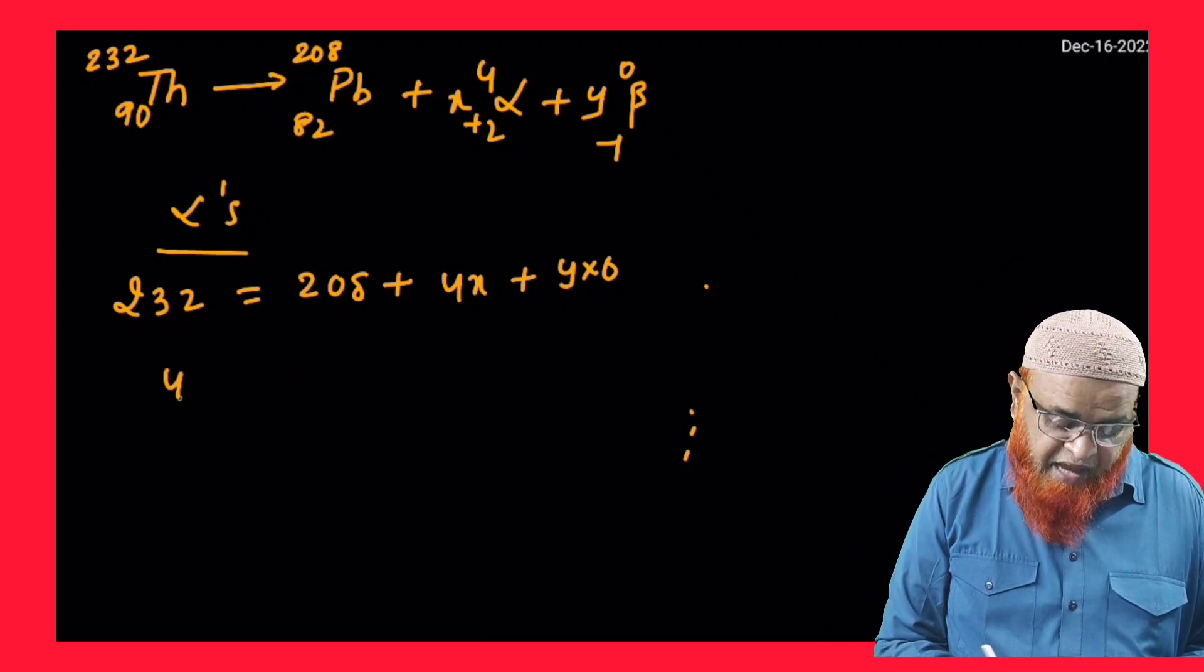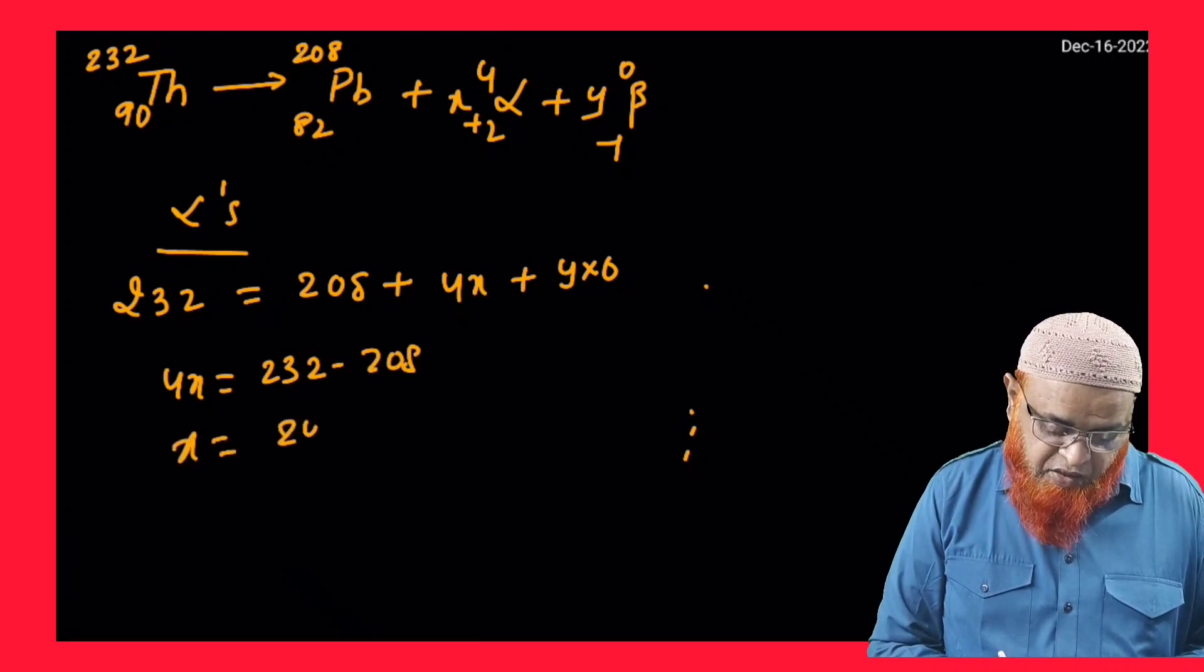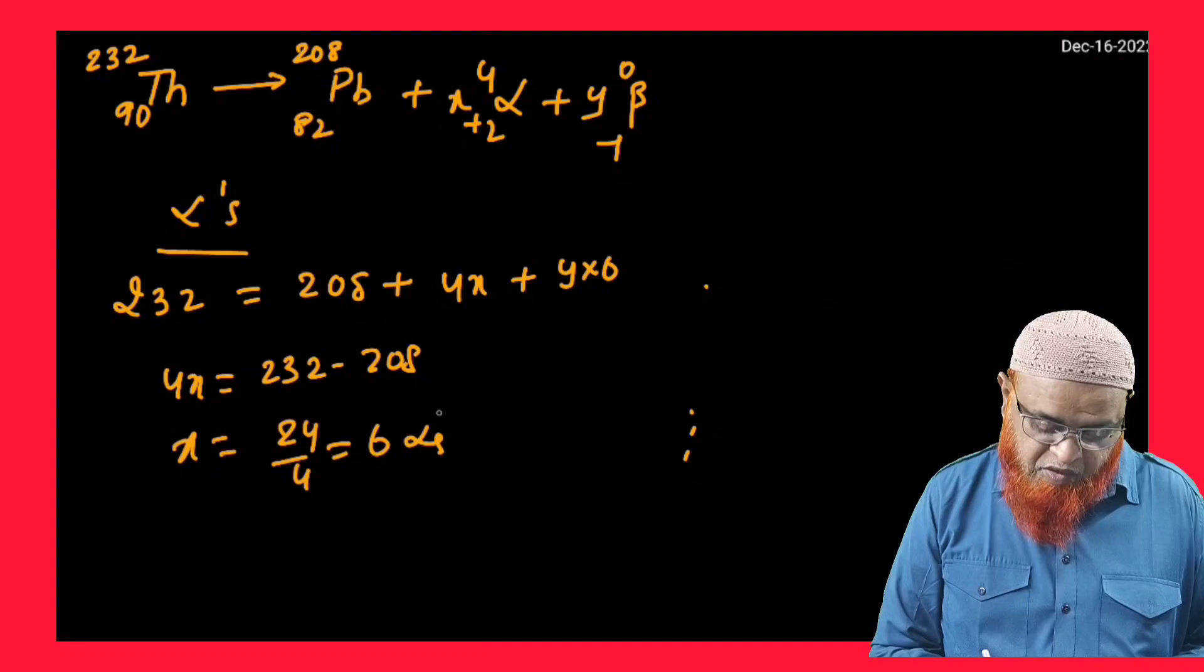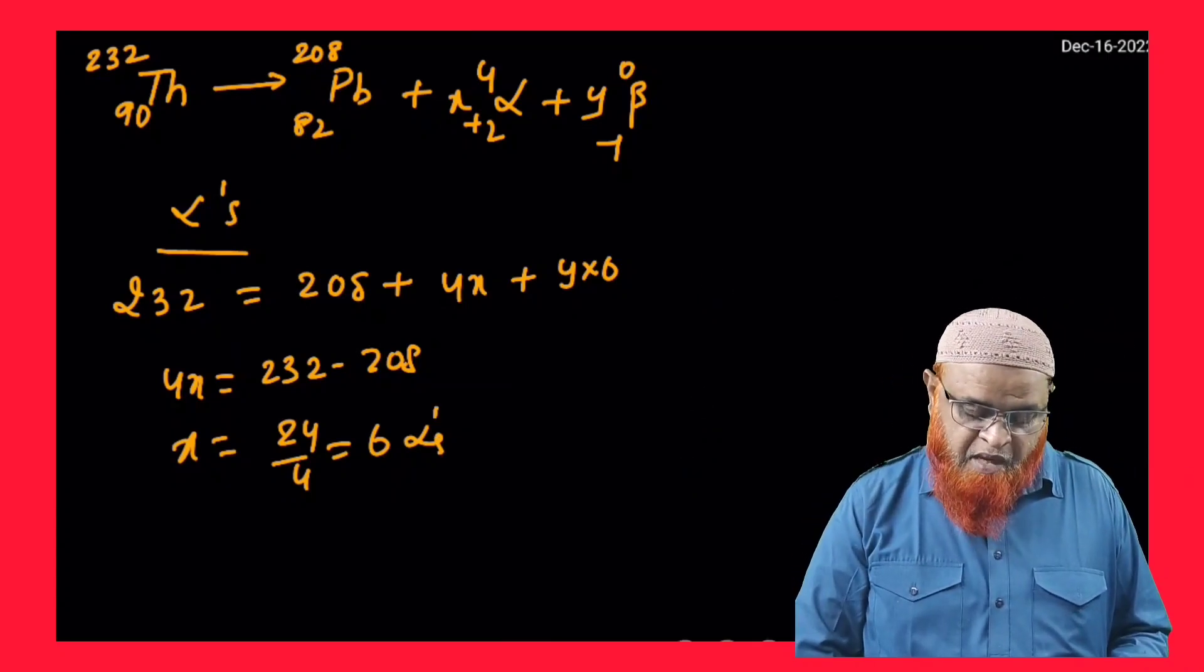So 4x = 232 − 208, so x = 24/4, which is nothing but 6 alphas. So we're getting 6 alphas here. And how can you find out the number of betas? Let us discuss that.